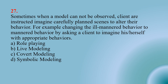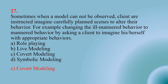Number twenty-seven: Sometimes when a model cannot be observed, clients are instructed to imagine carefully planned scenes to alter their behavior. For example, changing ill-mannered behavior by asking a client to imagine themselves with appropriate behaviors — Option A: role playing; Option B: live modeling; Option C: covert modeling; Option D: symbolic modeling. The right option is C — covert modeling.